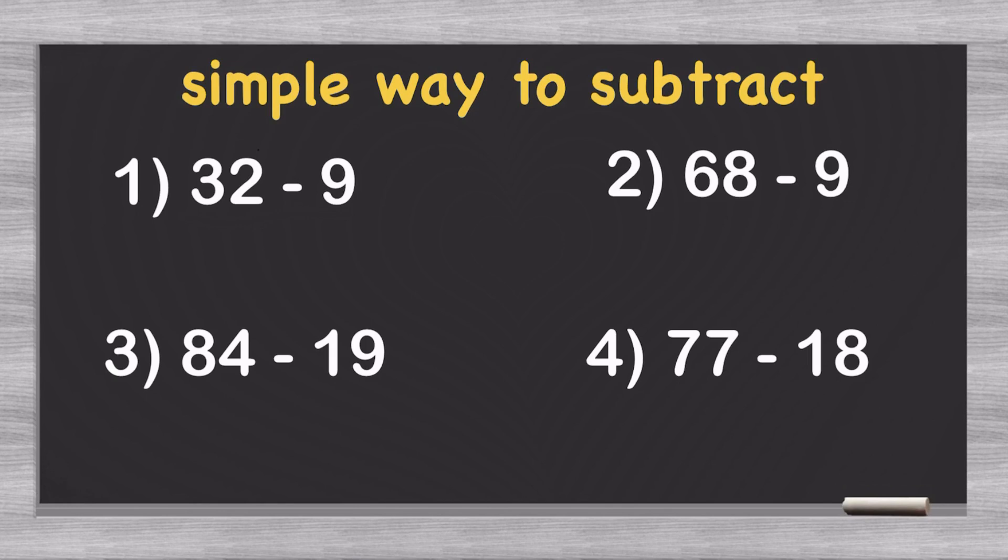Now, 32 minus 9 would normally be solved by carrying. So you would have to do 12 minus 9, which you then figure out is 3, and then you'd have to reduce this to 2, and then you would get 23 out the end. And yes, this is the answer, but there is a much easier way to solve it.